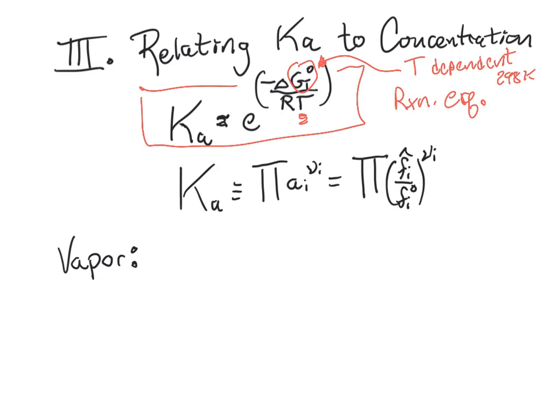Then you also recall Ka is defined as the set of multiplied by each other activities raised to their stoichiometric coefficients, which is the same thing as saying it's a fugacity divided by a standard state fugacity raised to the stoichiometric coefficient. And you're like, okay, that's great. I seem to recall fugacity has something to do with concentration as does activity. And you're right.